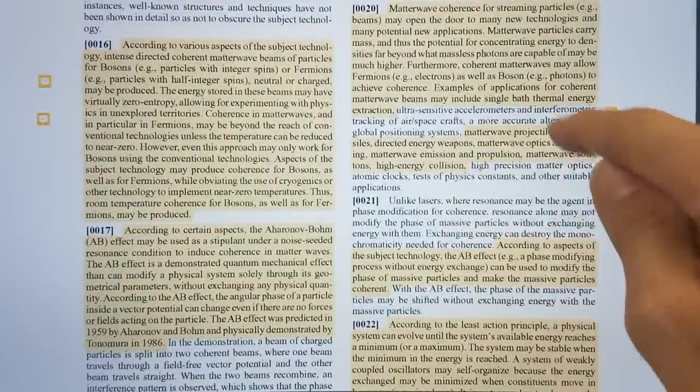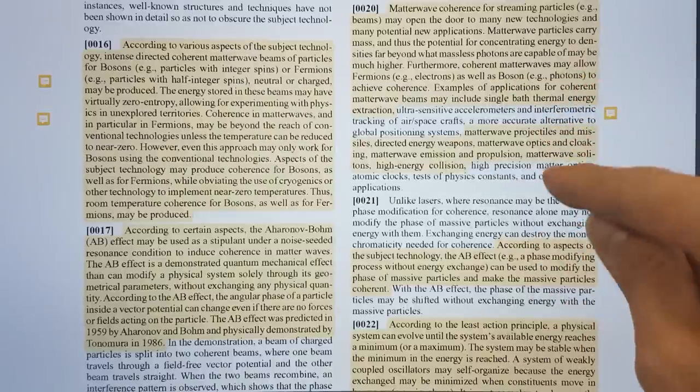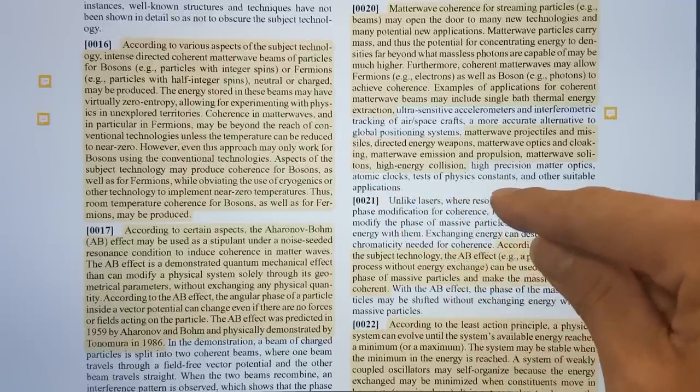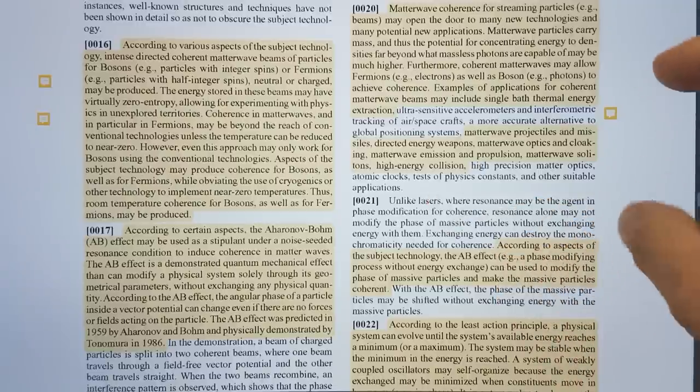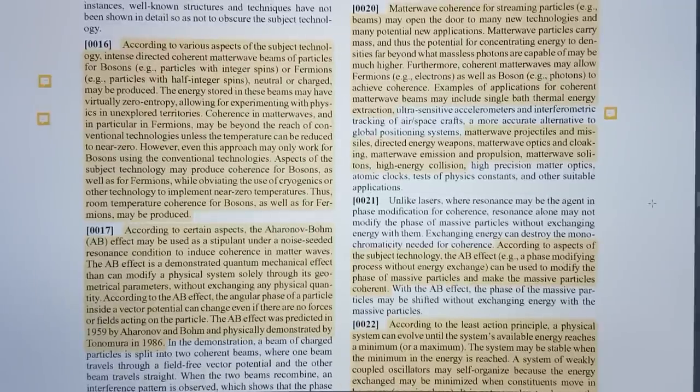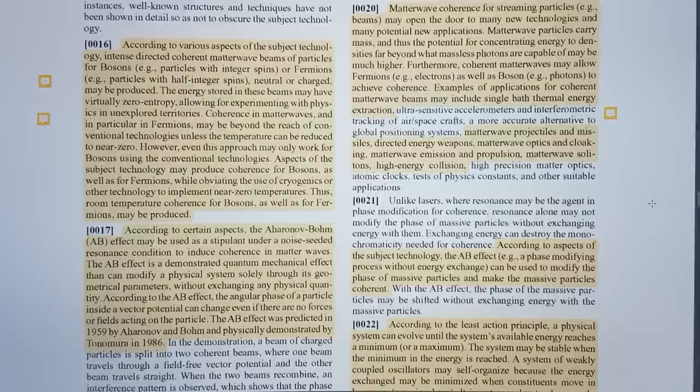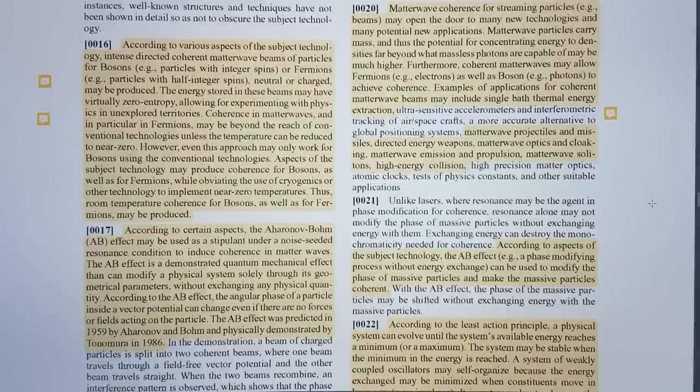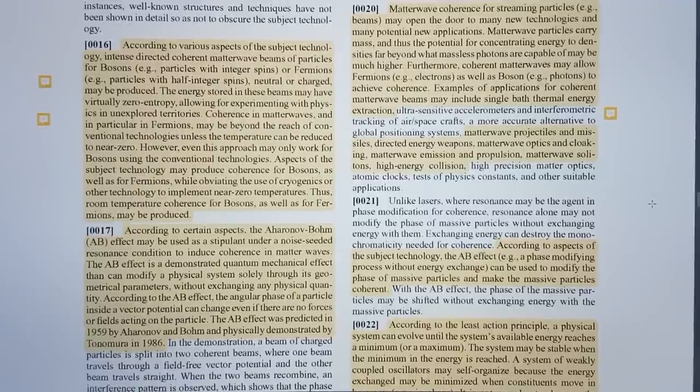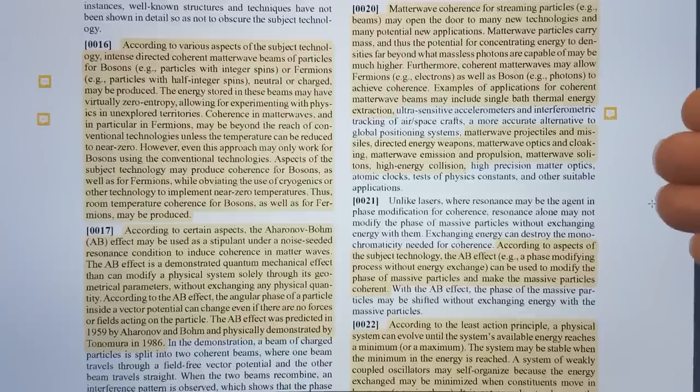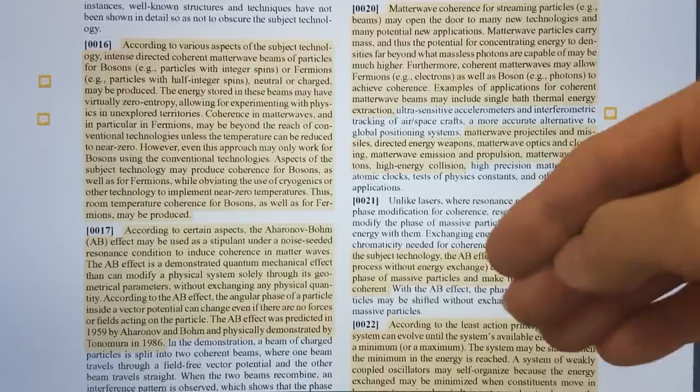Matter wave emission and propulsion, so you can actually use this as a propulsion system. Matter wave solitons, high energy collision, high precision matter optics, atomic clocks, tests of physics constants, and other suitable applications. What this is saying here is basically many of the things that John Hutchison demonstrated from 1979 onwards that was known to the Soviets, possibly at least in theory from 1976. It would seem that they had some of these things developed by the 1980s. In fact, the Duga array was apparently a scalar interferometer according to Bearden. This could be used to create weather systems, earthquakes, volcanoes, trigger them. You energize the tectonic plates and so forth.